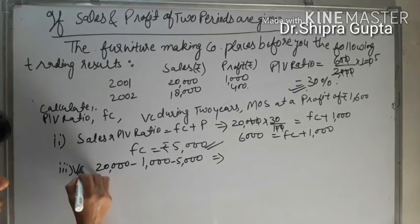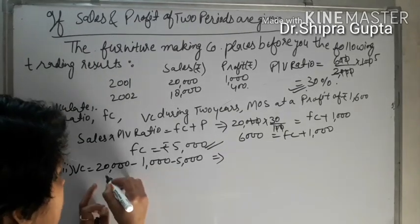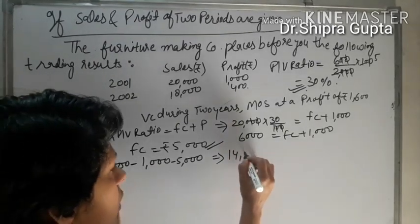Variable cost will be 20,000 minus 6,000 equals 14,000.